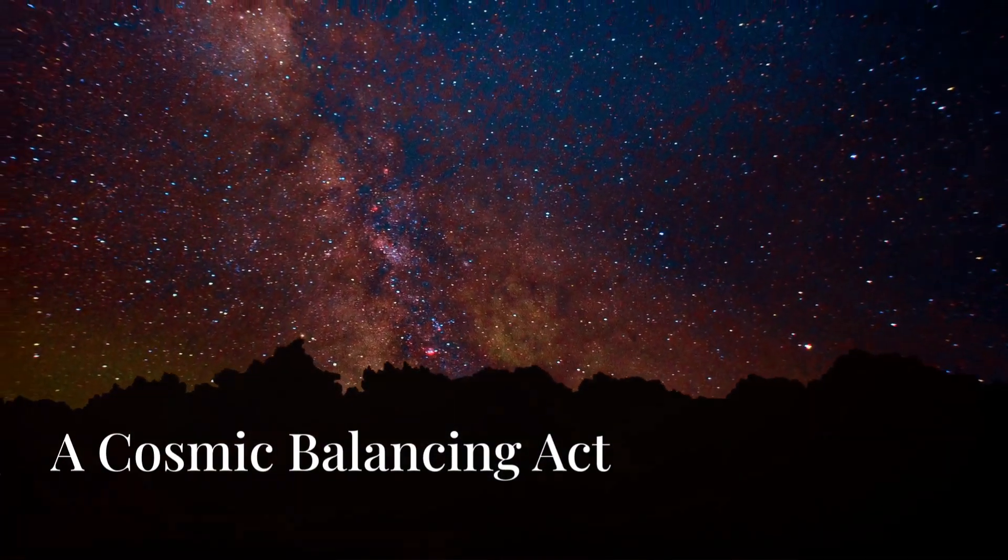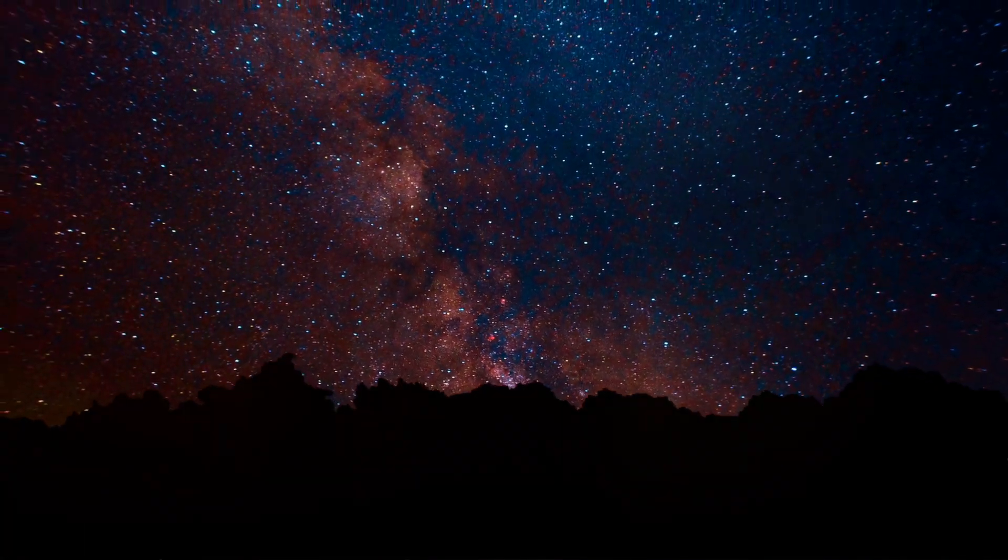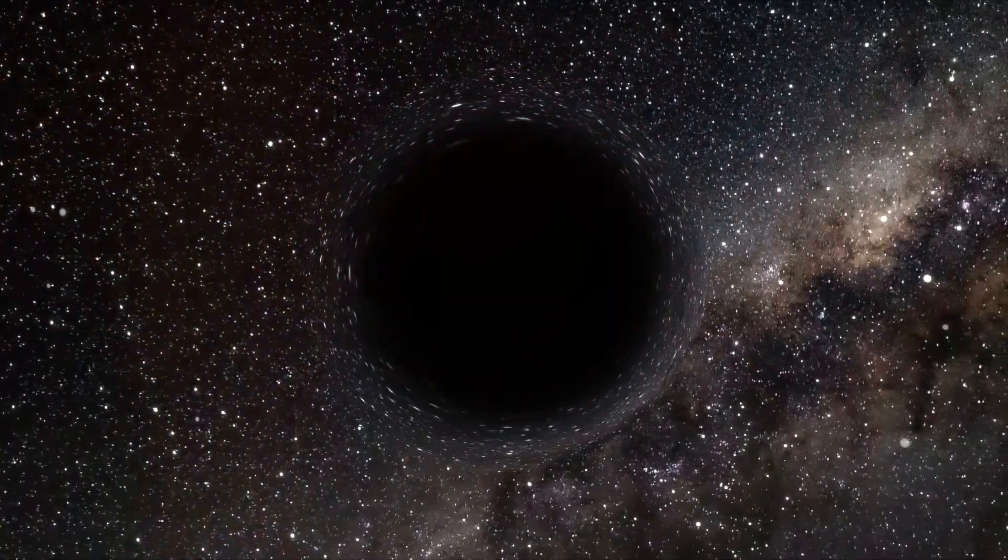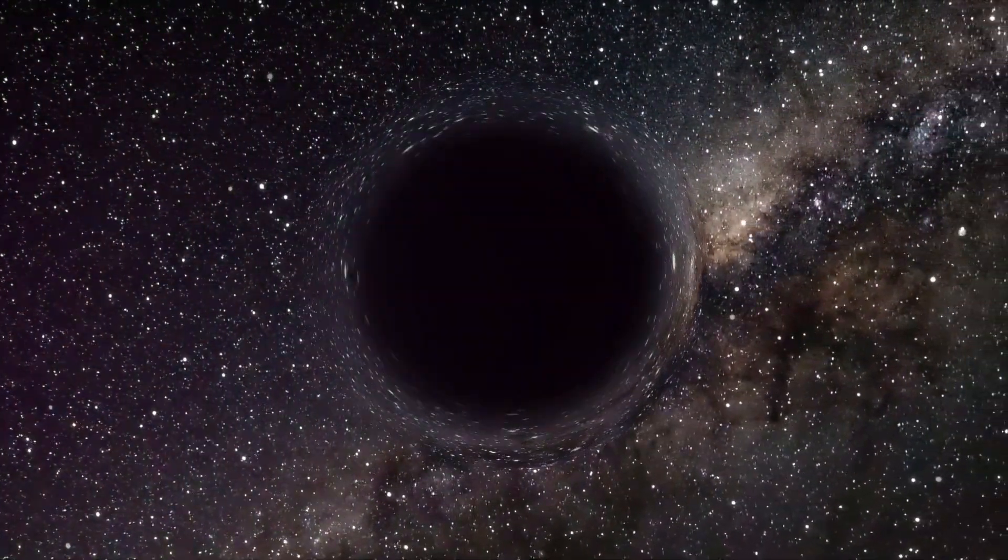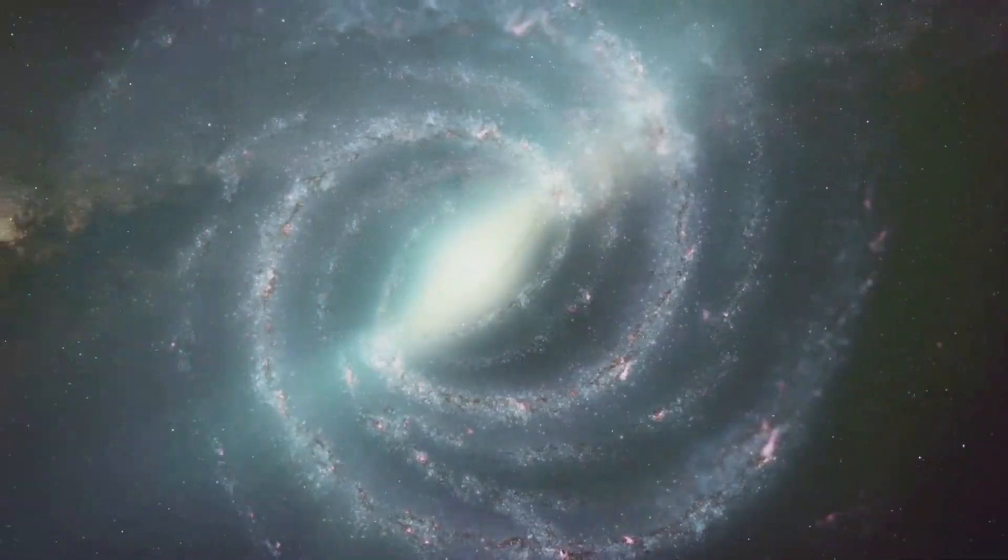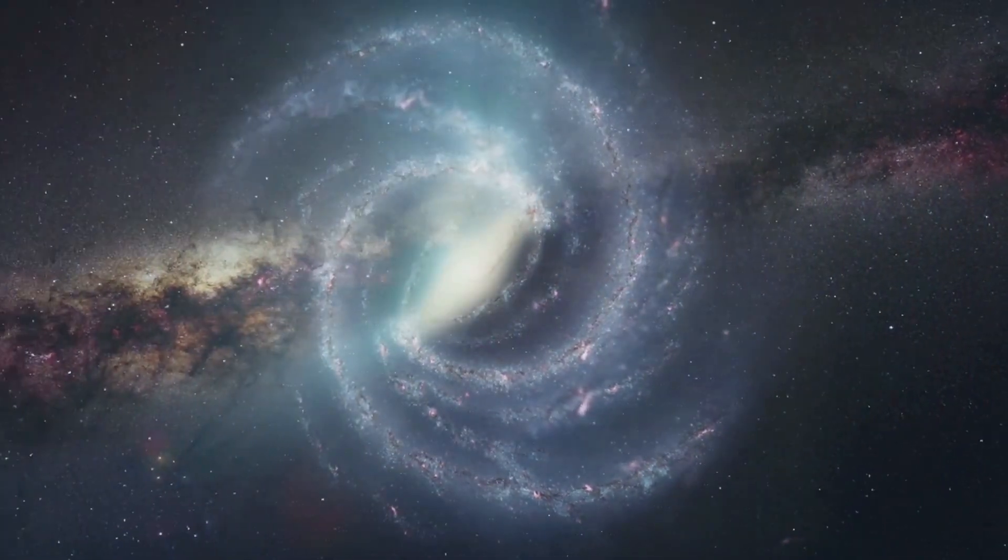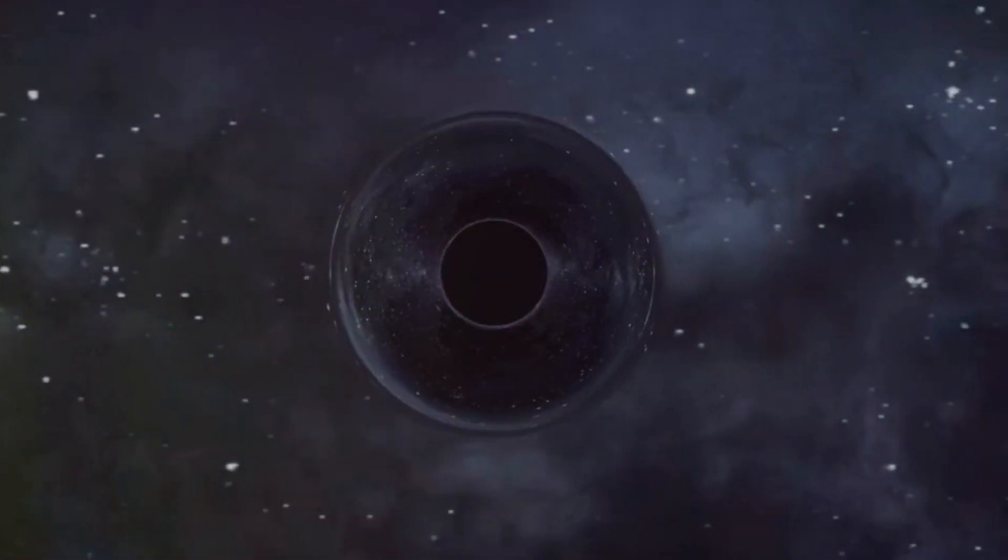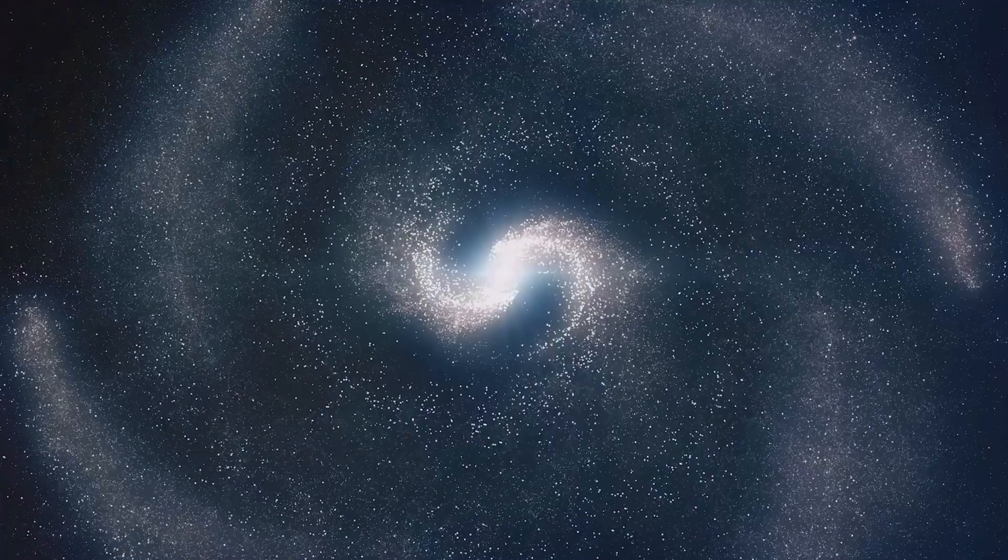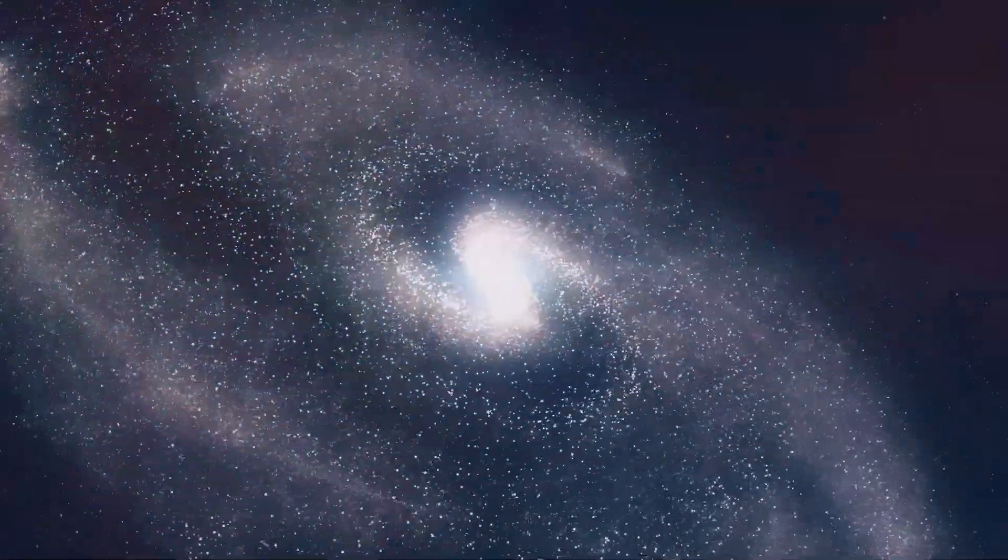The Milky Way is a resilient and dynamic galaxy, having weathered its fair share of cosmic storms over its billions of years of existence. While Porphyrian's presence undoubtedly introduces an element of uncertainty, it's unlikely to spell immediate doom for our galactic home. The Milky Way is a vast and complex system, with its own gravitational forces and intricate web of interactions between stars, gas, and dark matter. While Porphyrian is a gravitational heavyweight, it's still just one piece in this grand cosmic puzzle. The galaxy's own gravitational forces would likely act to mitigate some of Porphyrian's disruptive influence, preventing widespread chaos and maintaining a semblance of order.